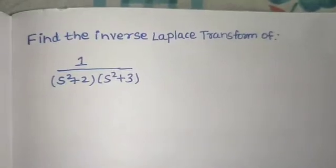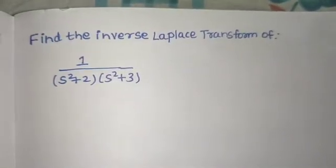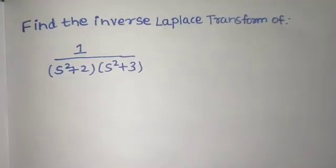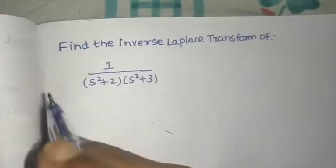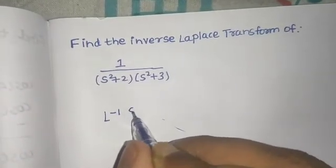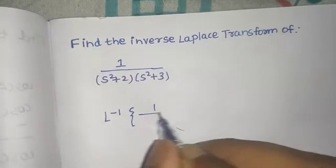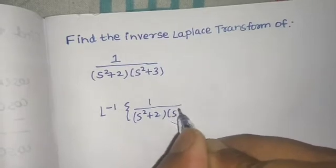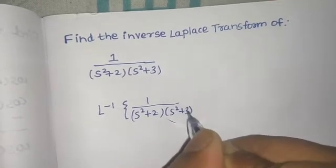Find the inverse Laplace transform of 1 over (s²+2)(s²+3). So basically, we need to find the inverse Laplace transform of 1 over (s²+2) multiplied by (s²+3).